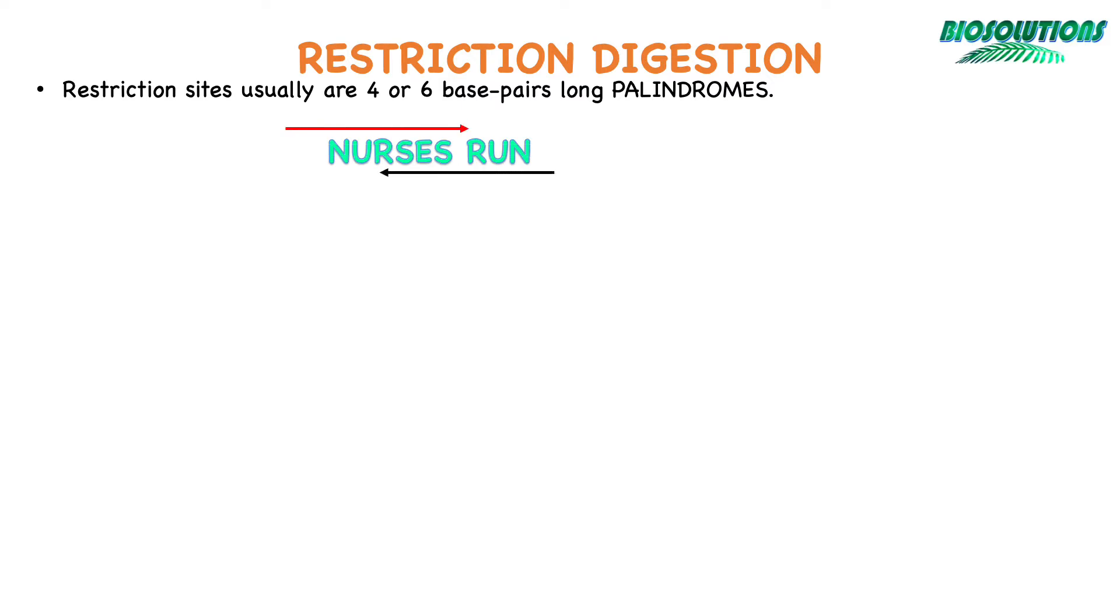Palindromes read the same in 5' to 3' direction on both the strands, as shown here in this example 'nurses run', where if you read from left to right or right to left it reads the same.